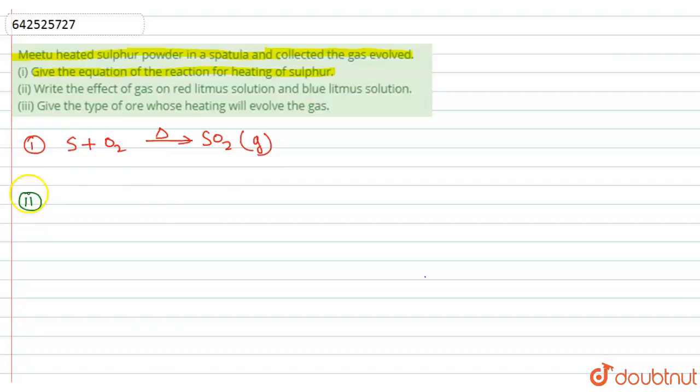Now in the second part of this question, write the effect of the gas on the red litmus solution and blue litmus solution.